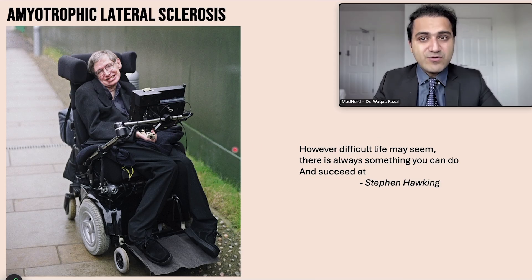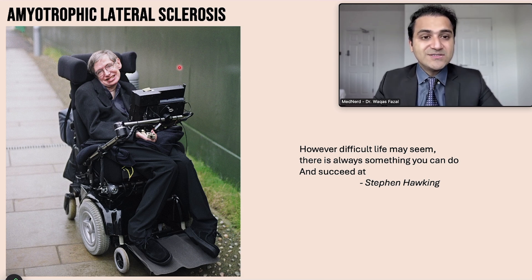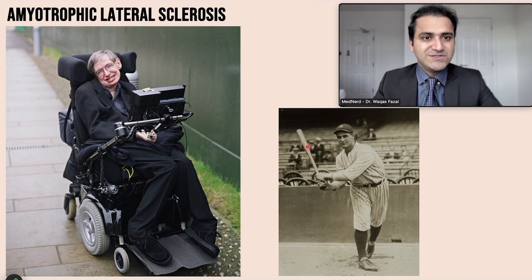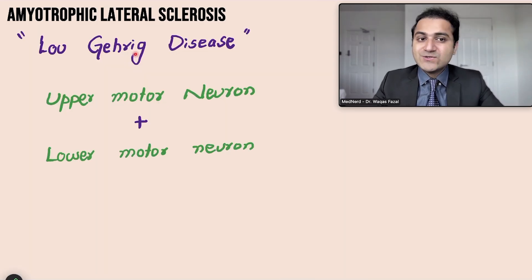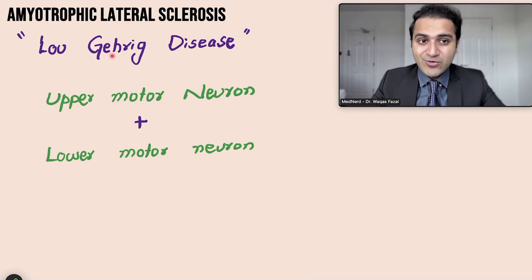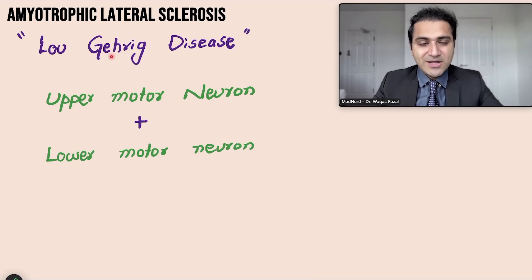Stephen Hawking suffered from Amyotrophic Lateral Sclerosis. ALS is also called Lou Gehrig disease because a famous baseball player also suffered from this disease. In this video we are going to talk about Amyotrophic Lateral Sclerosis — how does it present, how do you diagnose it, how do you manage it.